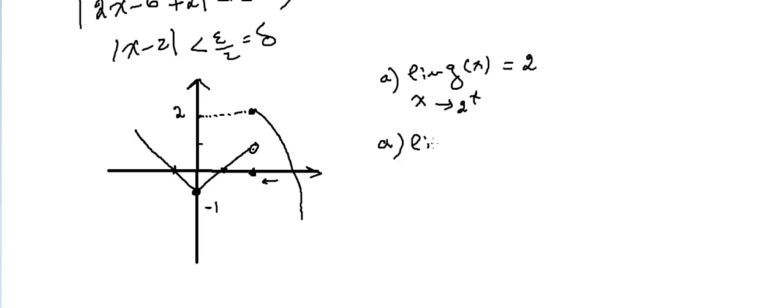And limit of g(x) as x approaches 2 minus—2 minus means below 2, right? When x is below 2, it's over here, so the answer is simply equal to 1. So do we have a limit? Does the limit exist here? This is part B, sorry. Does the limit exist here? No, the limit doesn't exist.